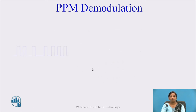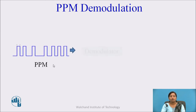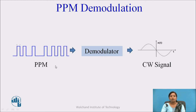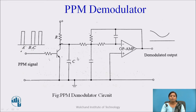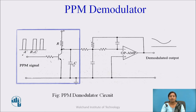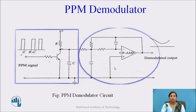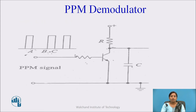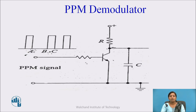Next is PPM demodulation. In PPM demodulation, the pulse-position modulated signal is given as input to the demodulator, and at the output we get the original information or continuous time signal. In the PPM signal, the width and amplitude of all pulses are the same, but there is a change in position of the pulses. The information in the PPM signal is in the form of change in position, meaning the information is present in the gap between the pulses.